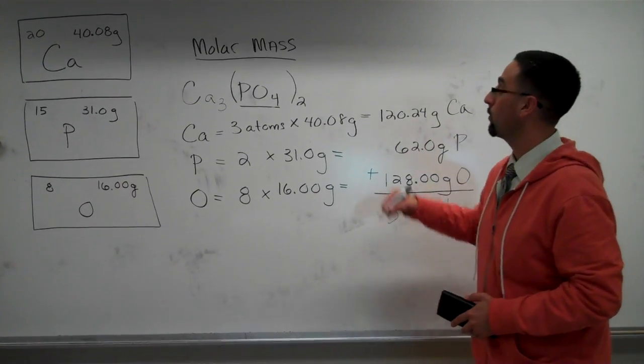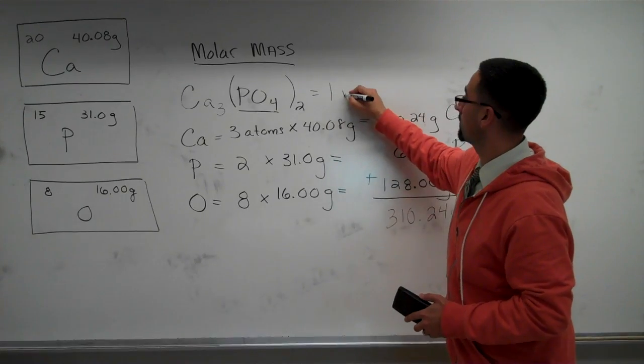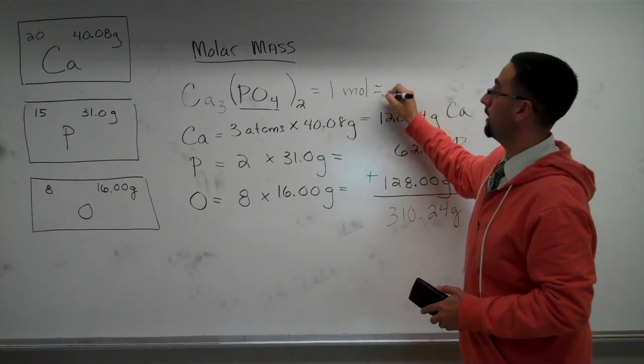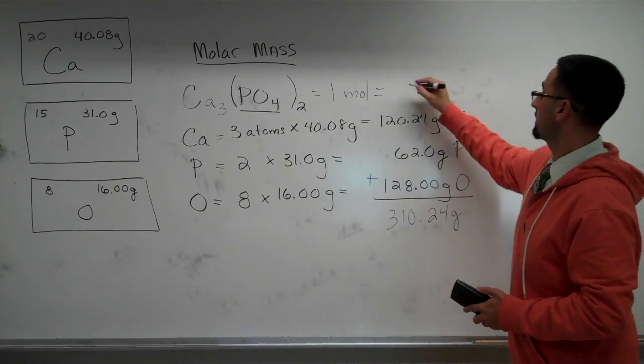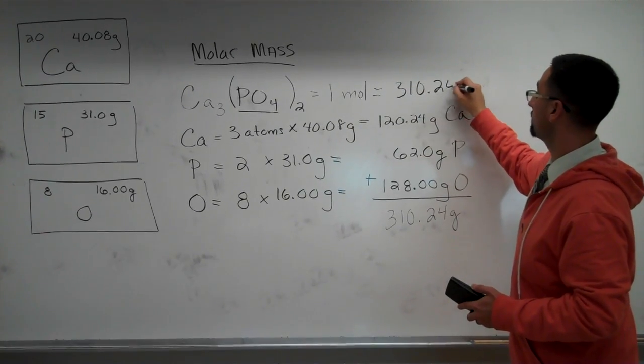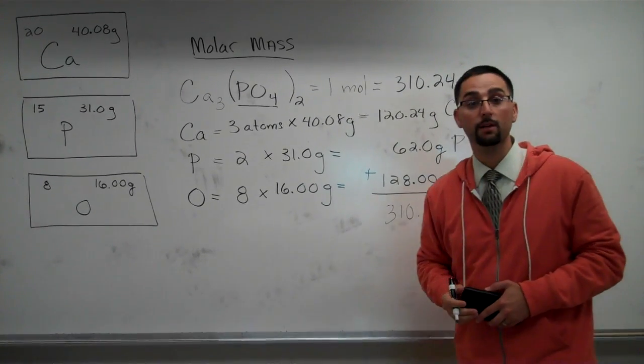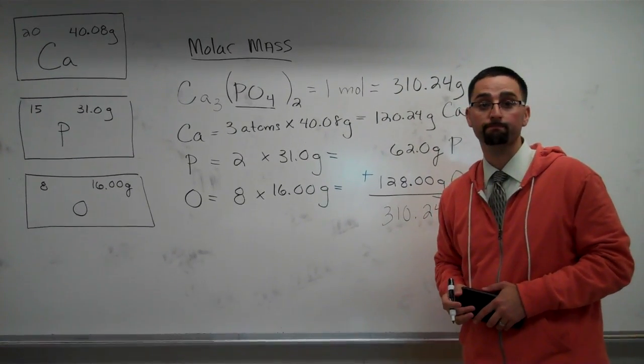So we conclude at the end of this is that one mole of calcium phosphate is 310.24 grams, and that's how you calculate molar mass.